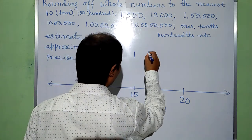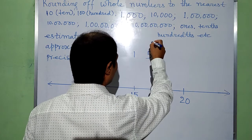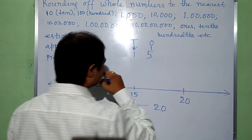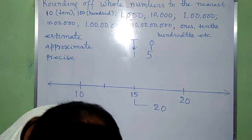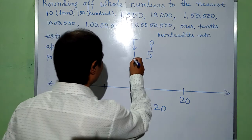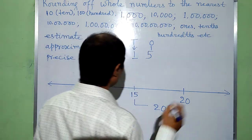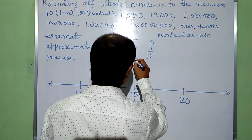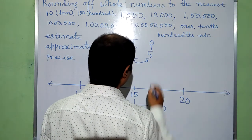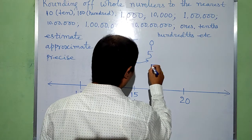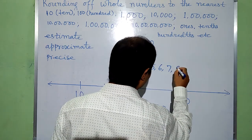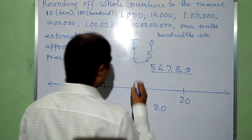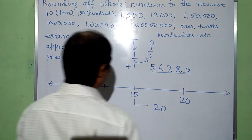Try to understand it in a different way. 15 has 5 at the 1's place and 1 at the 10's place. We have to consider this target digit 1 first. After that, we have to look at the digit coming to the right side of this 1, that is 5. If the digit is 5, 6, 7, 8, or 9, then we have to add 1 to the target digit.